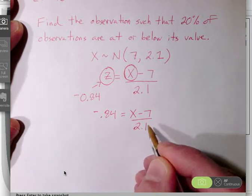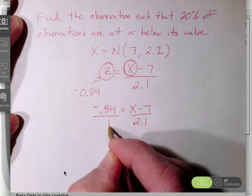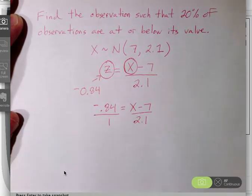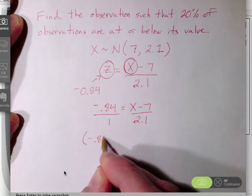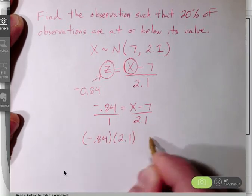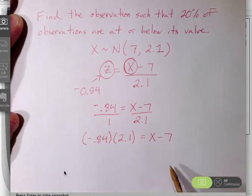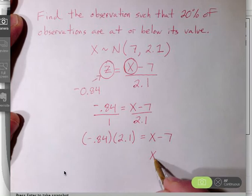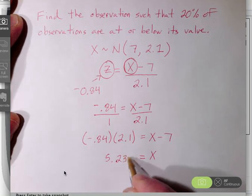I can write my negative 0.84 over 1 and I can cross multiply this. So ultimately I'm taking my z-score times the standard deviation and that's equal to x minus 7. So I can add 7 to both sides and that will give me the observation which is 5.236.